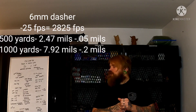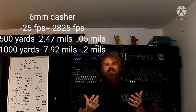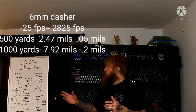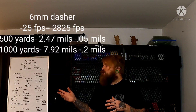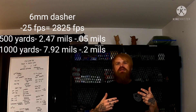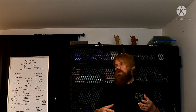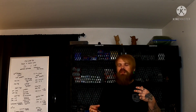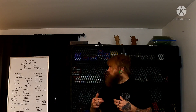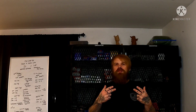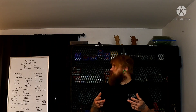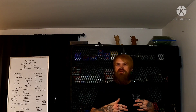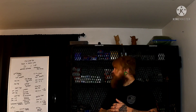At 1000 yards at the -25 fps load, it's going to be 7.92 mils — a standard deviation of just under 0.2 mils on the Dasher, based on our base load of 2850 fps versus the new load at 2825 fps, which is 25 feet per second slower.